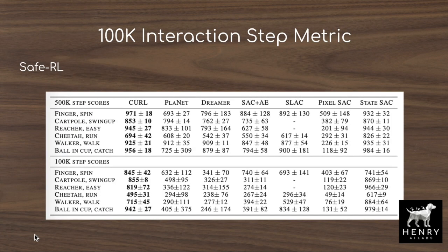There are interesting details around the 100,000 interaction step metric for evaluating sample-efficient RL. We want real-world robots to learn tasks as quickly as possible, but in the context of safe RL, it's also important whether the robot will break itself while learning — adding an interesting dimension to these efficiency metrics for real-world robot control.